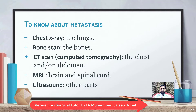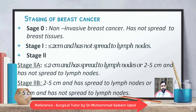Investigations to assess metastasis include chest X-ray for lung metastasis, bone scan, CT scan of the chest and/or abdomen, and MRI of the brain and spinal cord. Staging: Stage 0 is non-invasive cancer that has not spread to breast tissue. Stage 1 is a tumor ≤2 cm that has not spread to lymph nodes. Stage 2a includes tumors ≤2 cm with lymph node spread, or 2–5 cm without. Stage 2b includes tumors 2–5 cm with lymph node spread, or more than 5 cm without lymph node spread.